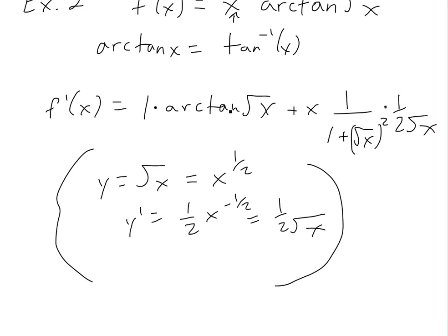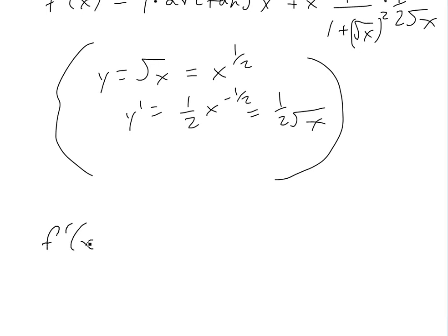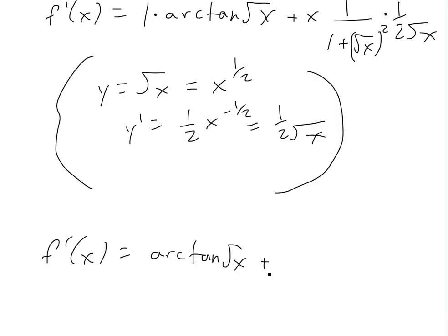So we can just simplify. This is our answer. If you're in an exam, you can just leave it like this unless they ask to simplify. So derivative would equal arctan of square root of x, plus now, this would be x. Let's just go x over 2 times 1 plus,